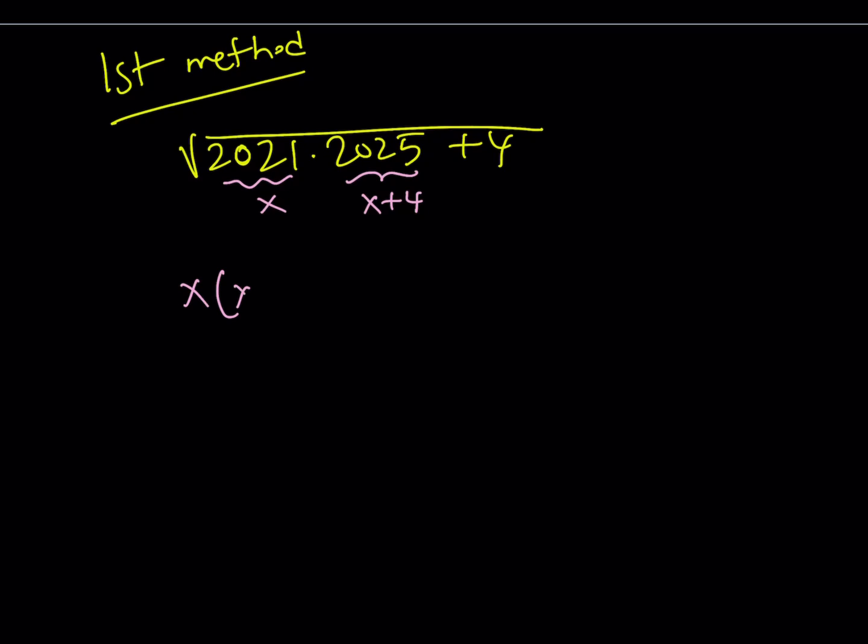So I have x times x plus 4 plus 4 and the square root of that is going to equal x squared plus 4x plus 4.